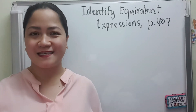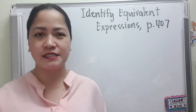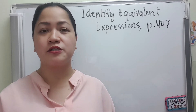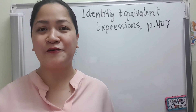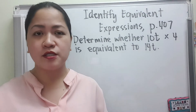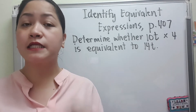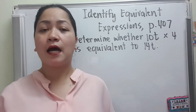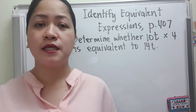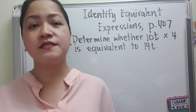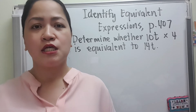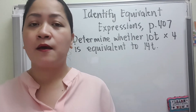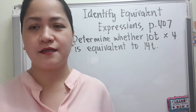Now let us proceed to page 407 to identify equivalent expressions. We are going to use combining like terms to identify equivalent expressions — expressions that have the same value or are equal. In identifying equivalent expressions, we will not just use combining like terms or addition and subtraction, but we can also use the other operations like multiplication and division. Unlike addition and subtraction, it doesn't matter if the terms are like or unlike in multiplication and division — you just multiply or divide the numerical coefficients or numerical terms.